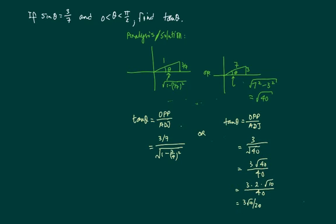So continuing from here, 3 over adjacent is the tangent. And if we rationalize the denominator by multiplying top and bottom by square root of 40, simplify a little better, here's the final answer. Well, I hope this helps.